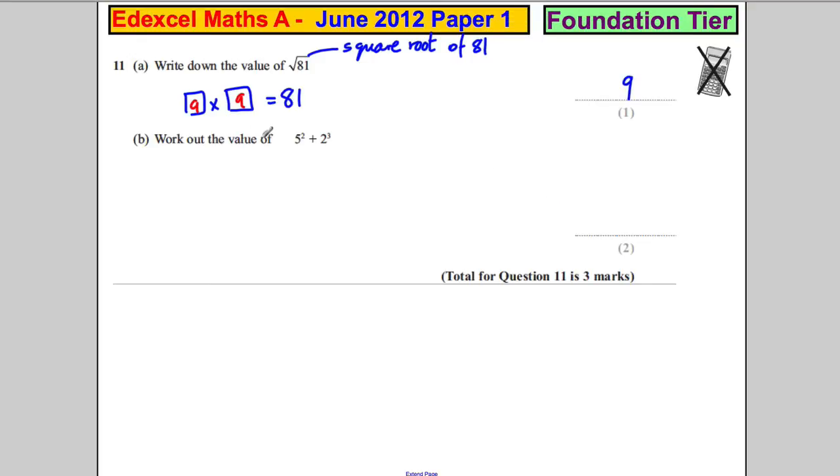Work out the value of the following. Well, by BIDMAS - Brackets, Indices, Division, Multiplication, Addition, Subtraction - we're going to do each of our indices first. 5 squared means 5 times 5.